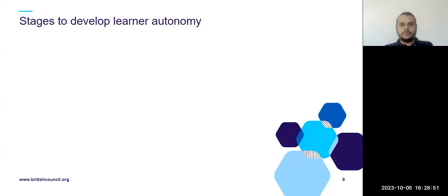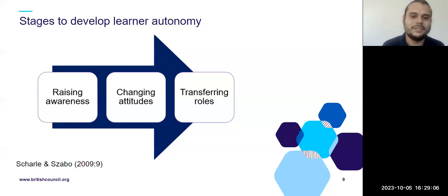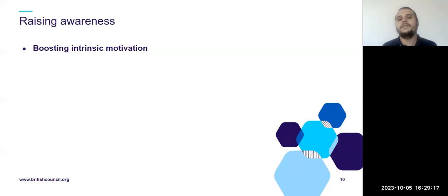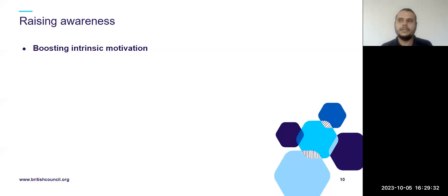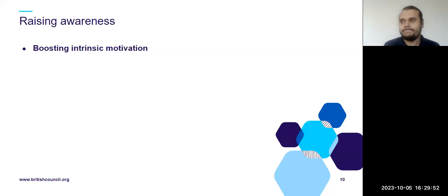How do we develop learner autonomy? Shot and Saddle propose three stages: raising awareness, changing attitudes, and transferring roles. In raising awareness, it's first about boosting intrinsic motivation. In Latin America, mainstream schools are used to being teacher-centered — the teacher talks, students listen, interaction is mostly teacher-student with no other option. When students come to the British Council, they are exposed to student-led lessons, different types of interaction and activities, and they're now able to choose or at least give their opinion on what they're doing.